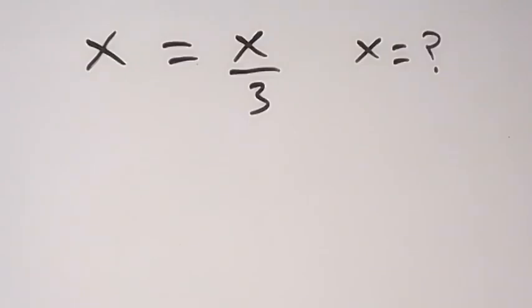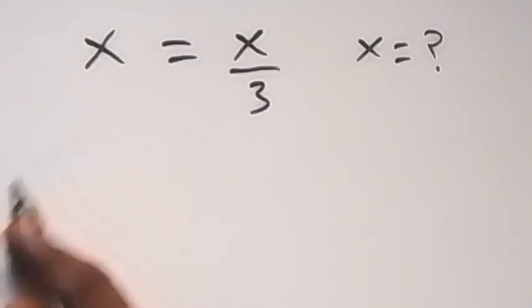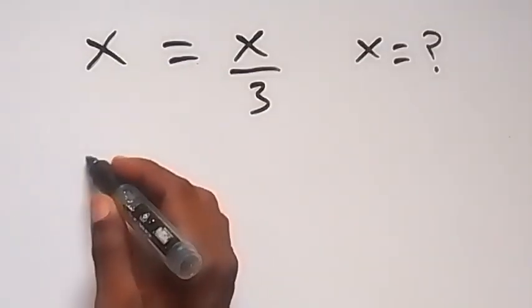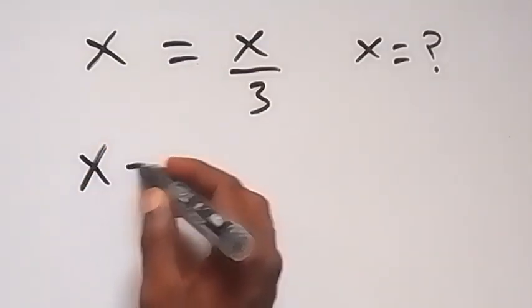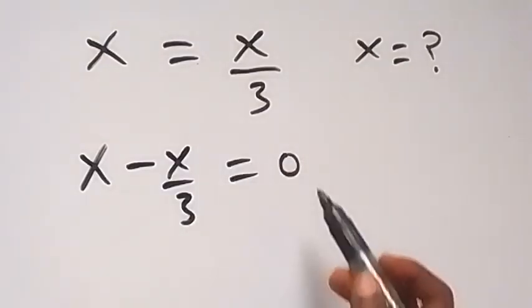Hello, you are welcome. How to solve this problem: x equals x over 3. From here, let's subtract x over 3 from both sides, and this becomes x minus x over 3 equals 0.